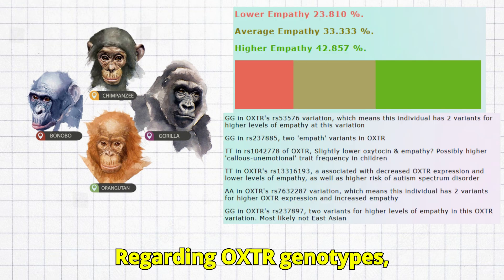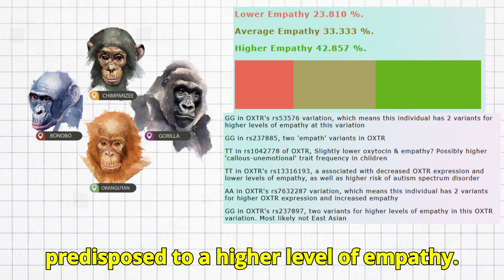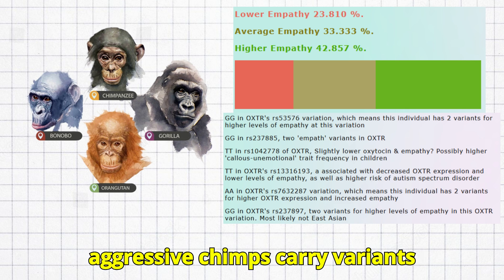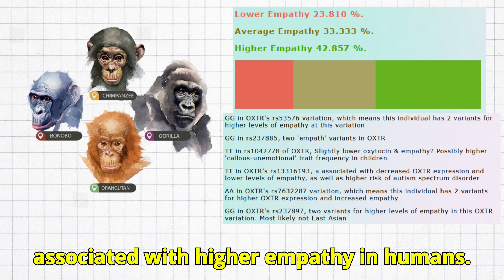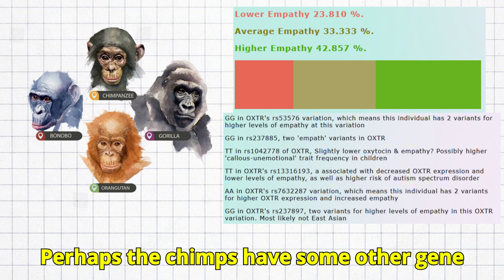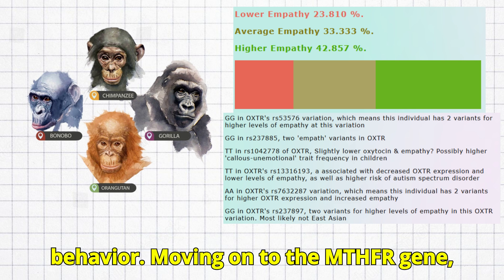Regarding OXTR genotypes, surprisingly all great apes are predisposed to a higher level of empathy. Even the notoriously cruel and aggressive chimps carry variants associated with higher empathy in humans. Perhaps the chimps have some other gene that contributes to their violent behavior.